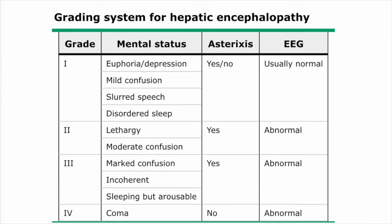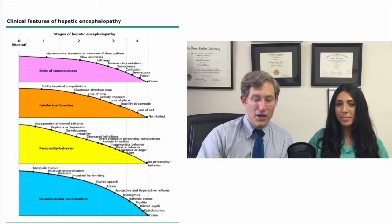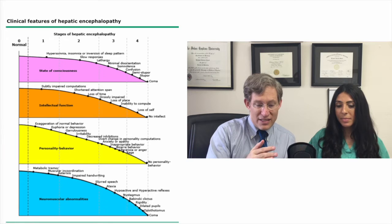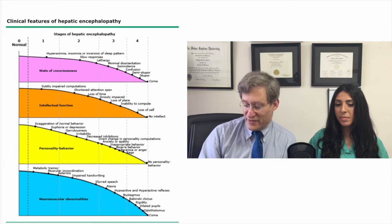We wanted to start by sharing the structured grading system for patients with hepatic encephalopathy. It goes grades 1 to 4: grade 1 with euphoria and depression, lethargy at stage 2, all the way up to stage 4 coma. Those stage 4 patients will be critically ill, unable to protect their airway, and in the intensive care unit. You can also see information about the presence or absence of asterixis and findings on their electroencephalogram.